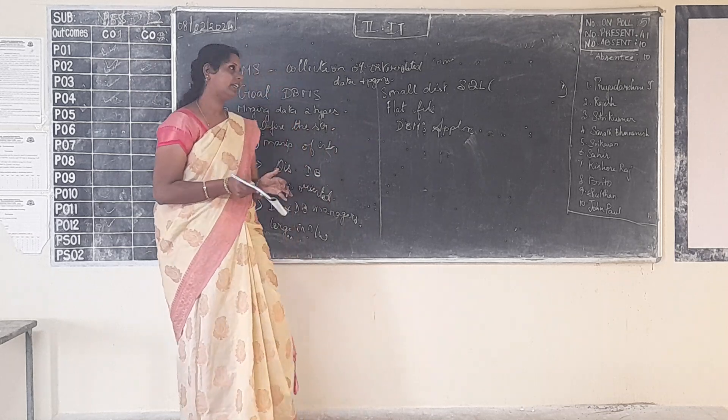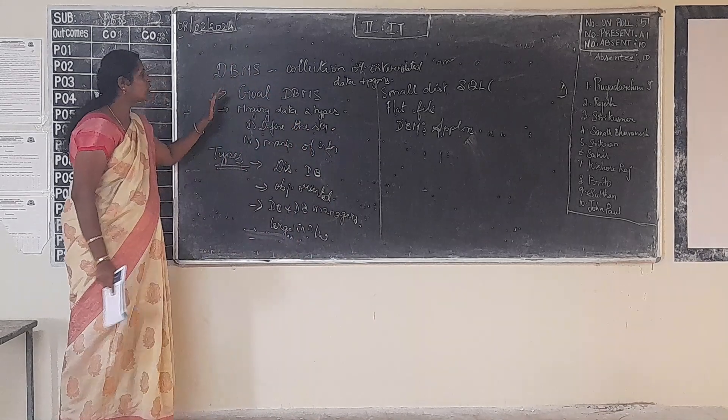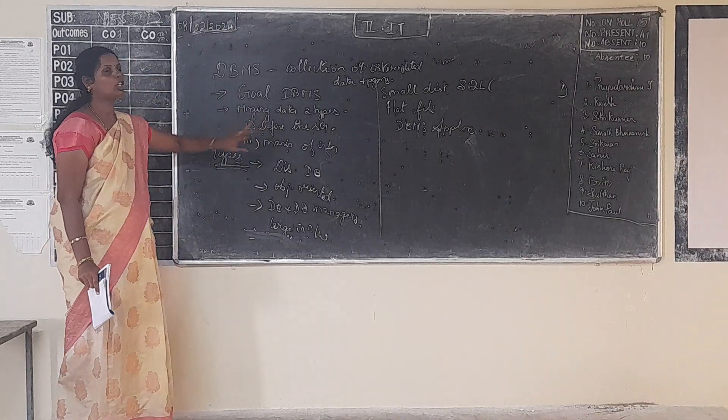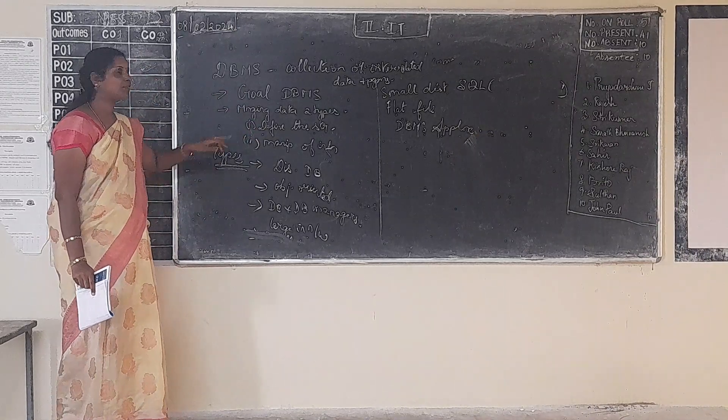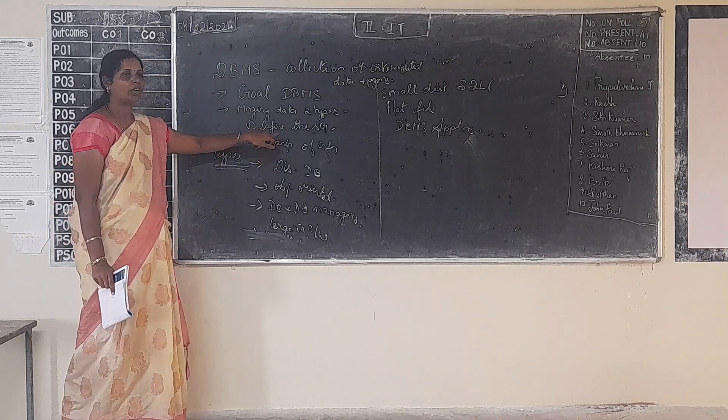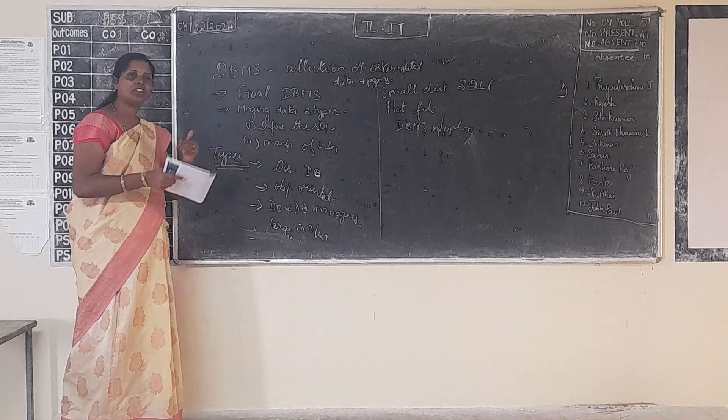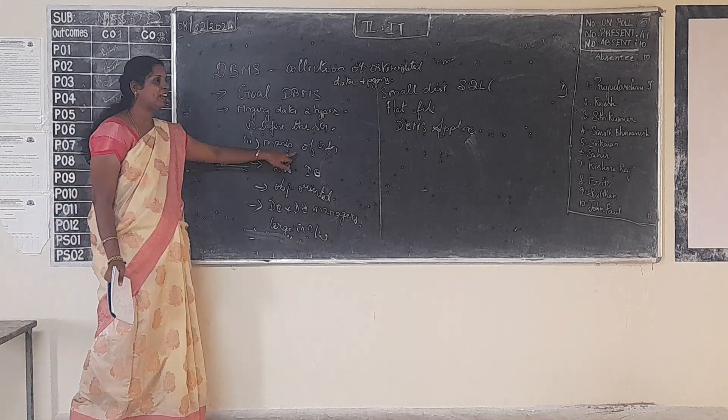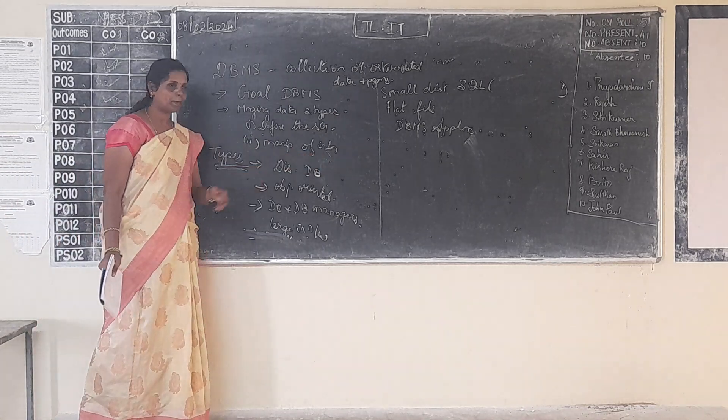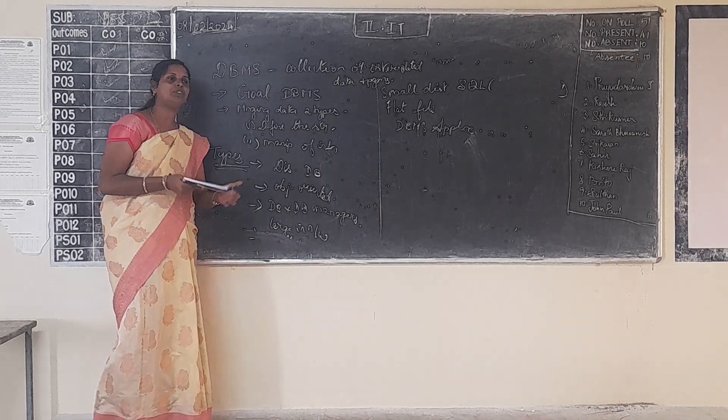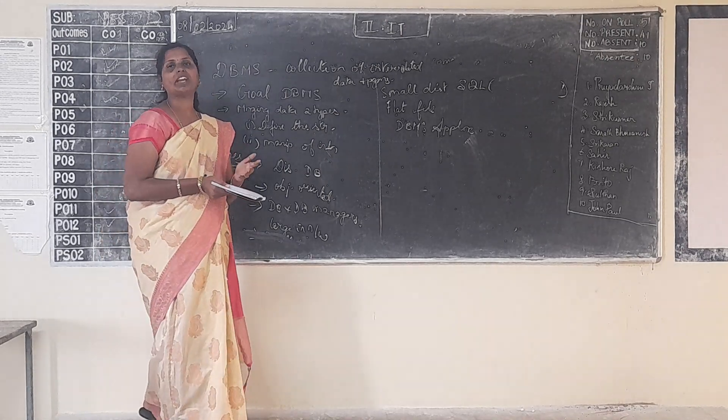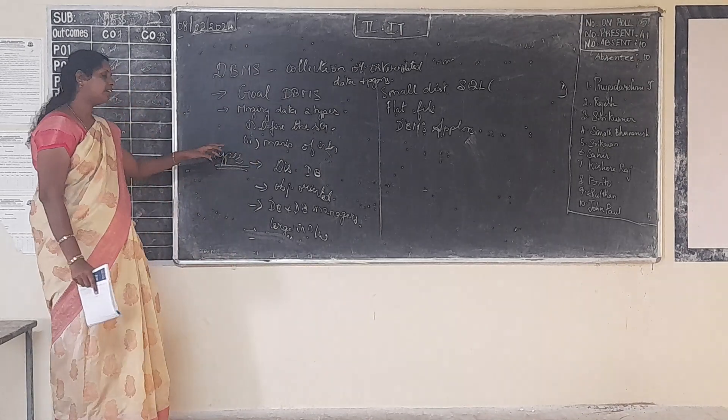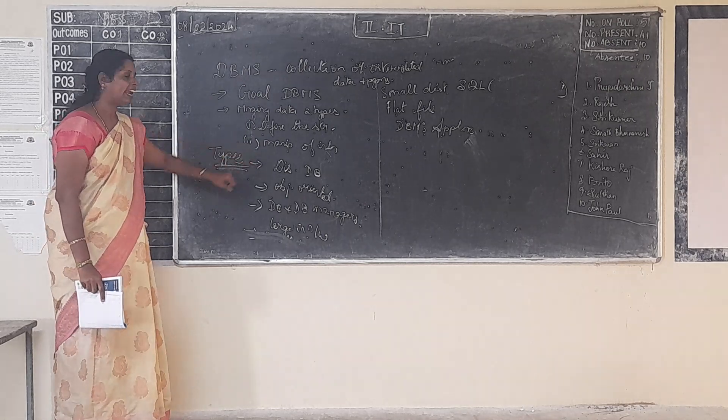What is the goal for DBMS? Managing data in two types. That is defining the structure. Defining means doing some alteration according to the customer's requirement, and also management of information. Management is also the same, doing some changes. That is known as managing of information.